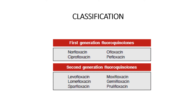We have two generations of fluoroquinolones. The first generation includes norfloxacin, ciprofloxacin, ofloxacin, and pefloxacin. Second generation fluoroquinolones are levofloxacin, lomefloxacin, sparfloxacin, moxifloxacin, gemifloxacin, and prulifloxacin. Second generation fluoroquinolones basically have extended spectrum of action against more gram positive organisms and anaerobes.